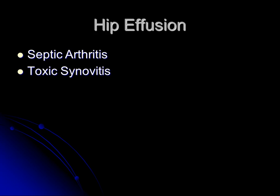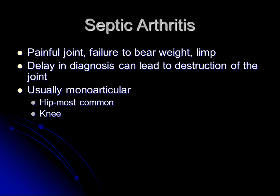The next common reason I do hip ultrasound is to look for hip effusion. The ultrasound is done to look for effusion, of which there is a differential diagnosis. The main thing referring providers worry about is septic arthritis, but it could also be toxic synovitis, Calvé-Perthes disease, trauma, or inflammatory arthritis. Ultrasound does not help distinguish between these — it just helps establish whether there is an effusion. Septic arthritis presents with a painful joint, failure to bear weight, limp, fever, and elevated inflammatory markers. A delay in diagnosis can lead to destruction of the hip joint. It's usually monoarticular, and the hip is the most common joint involved.